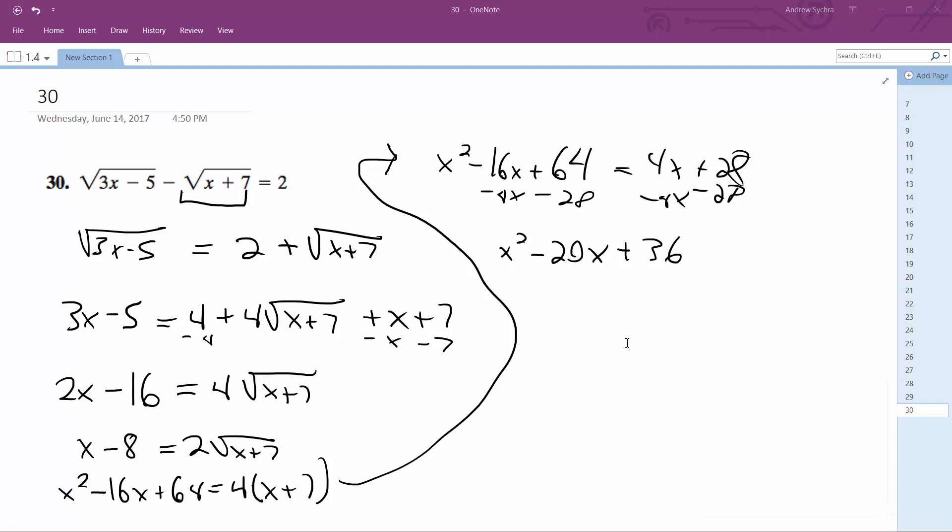So we end up getting x minus 18 and x minus 2 equals 0. So x equals 2 or 18.